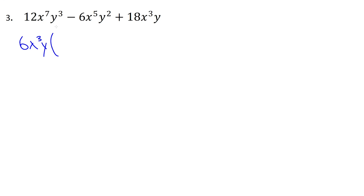We open brackets and write what's left after dividing each term by 6x³y. 12 ÷ 6 = 2, and x⁷ ÷ x³ = x⁴ by subtracting exponents. A common mistake is dividing coefficients but then also trying to divide the exponents, or subtracting coefficients like 12 - 6. Remember these operations are separate: divide the coefficients, subtract the exponents for variables. So y³ ÷ y = y².